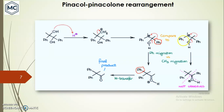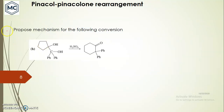In another case, if there were a chance of transferring the methyl group to stabilize the carbocation, you would get a different product. However, this product was not observed. So in this particular case, phenyl has more migratory aptitude than methyl.